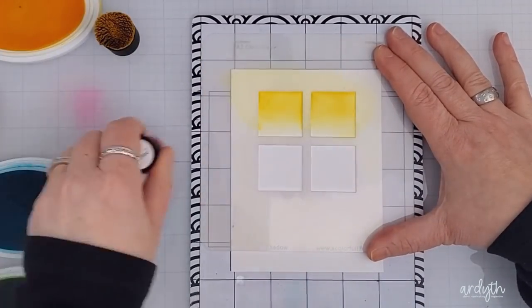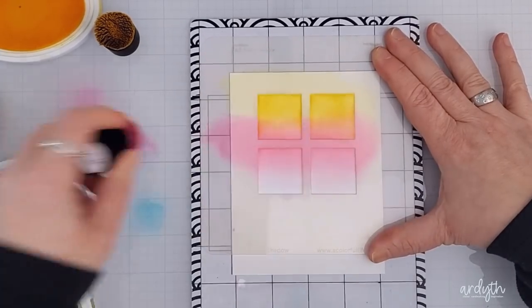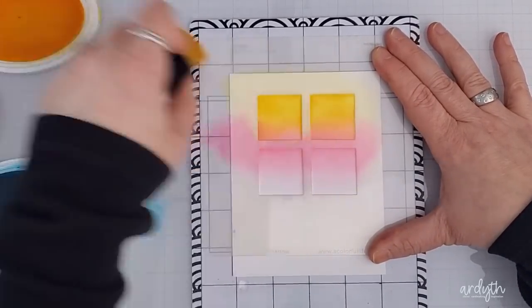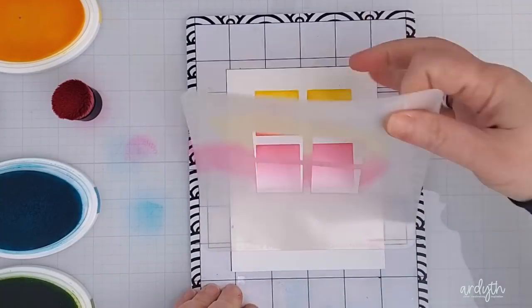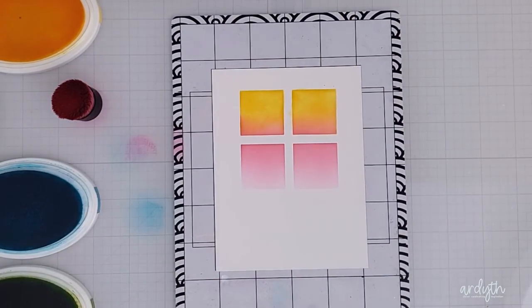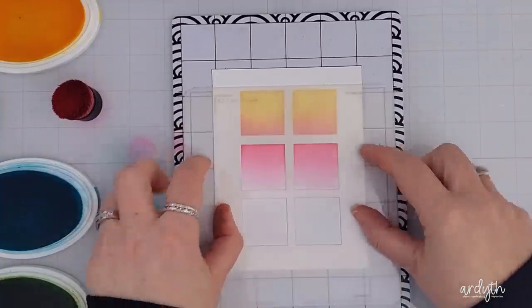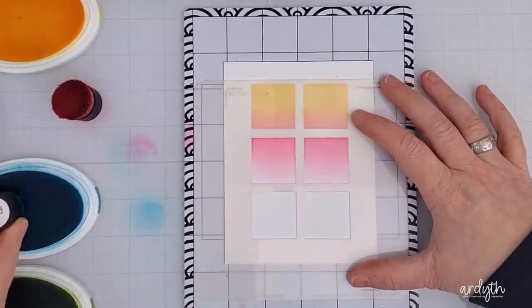Then blend the ink through. This time I'm going to do a continuous rainbow pattern. I start with yellow because it's my lightest color, then pink, not quite filling that bottom row. Then I cleaned and shifted the stencil so that the top row of the stencil is over the bottom row of ink blended squares, and then I blended blue ink and finally green ink.